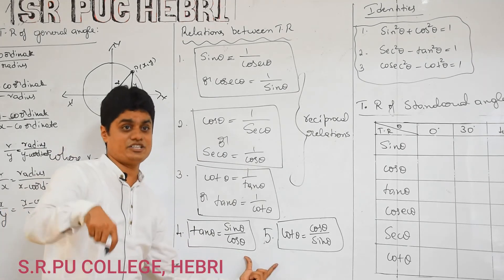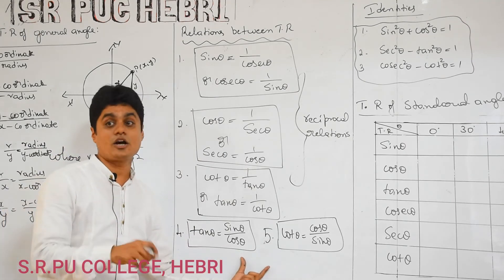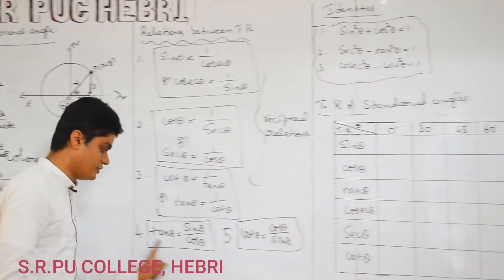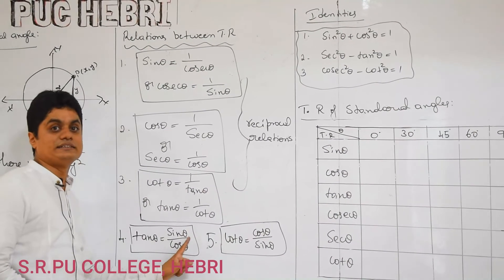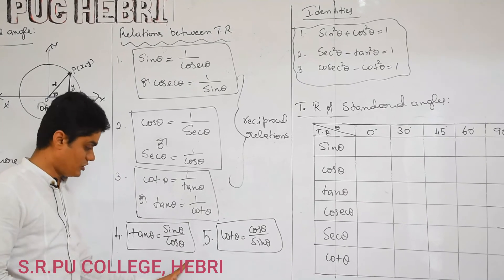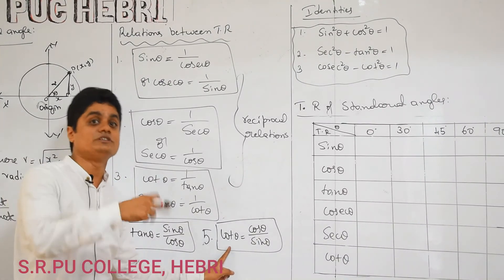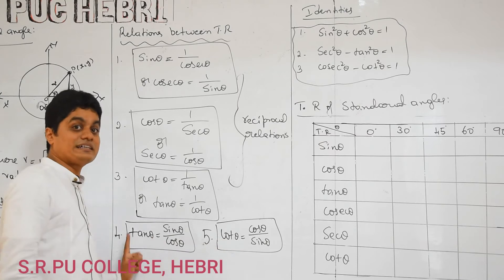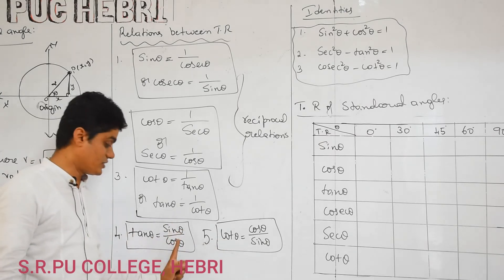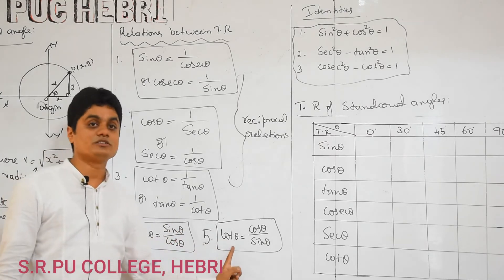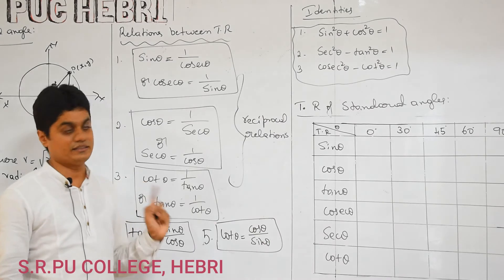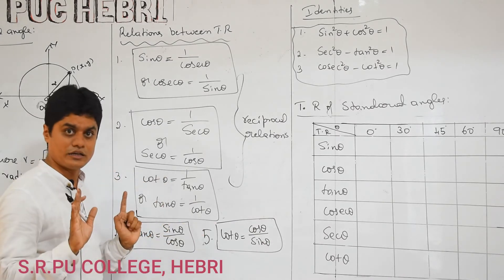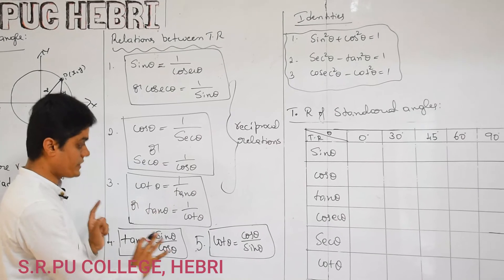The last two relations are called the quotient relations. Tan theta equals sin theta by cos theta, and cot theta equals cos theta by sin theta. I am just recalling. These are the important relations. First PUC — 11th standard trigonometry — is completely based on these basics. If the basic is not clear, then 11th standard trigonometry will be difficult. So you should compulsorily remember these.